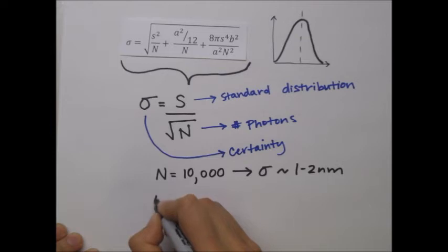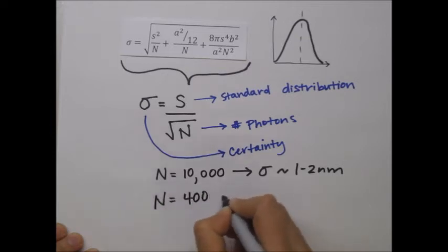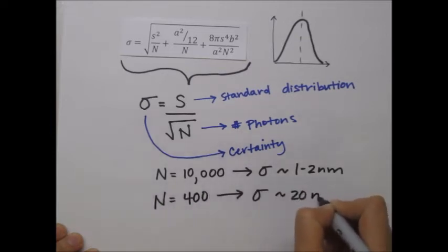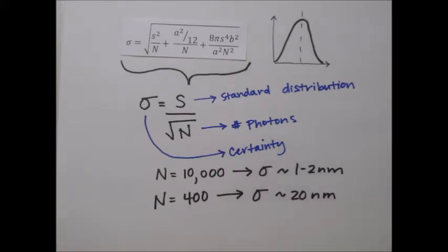For instance, collecting 10,000 photons generally results in a resolution close to 1 to 2 nanometers, while only collecting 400 photons could limit resolution to 20 nanometers.